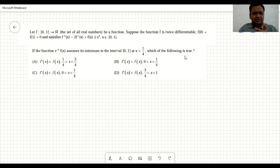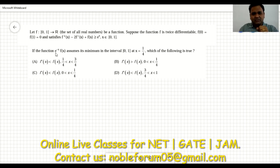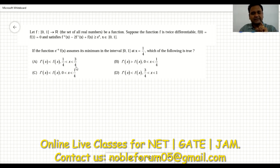Here we have a function from the closed interval [0,1] to R which is twice differentiable, and f(0) = f(1) = 0. This is the first derivative inequality of the function. You have been asked: the function e^(−x)·f(x), if it assumes its minimum value in the interval [0,1], then which derivative relation will the function satisfy?